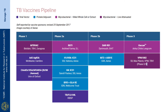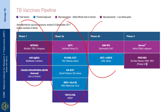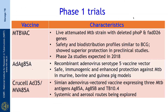This slide shows the global TB vaccine pipeline. We see that there are 3 vaccines in Phase 1, 5 vaccines in Phase 2a, 2 vaccines in Phase 2b, and 2 vaccines in Phase 3. I will briefly go through the characteristics of these vaccines in my next few slides.